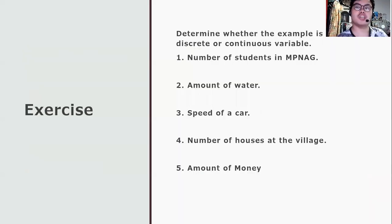Let's have an exercise. First, when we say number of students in MPNAG, we call it discrete because students are humans and each of them are being countable, and each of them are being described as a whole number.